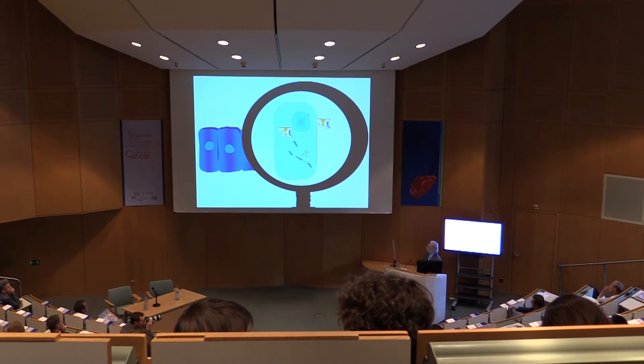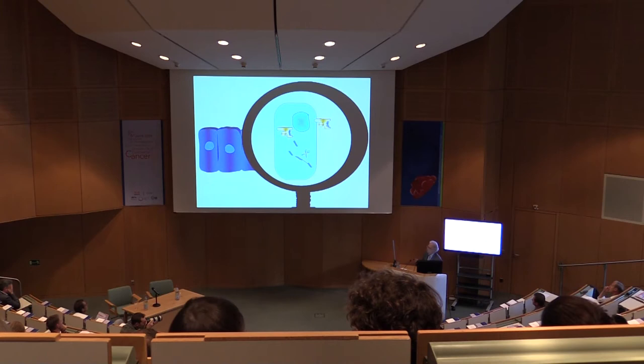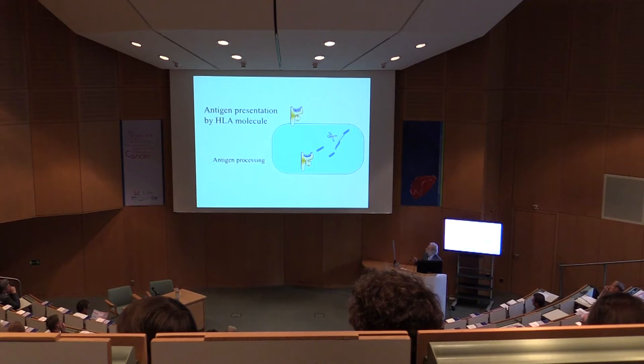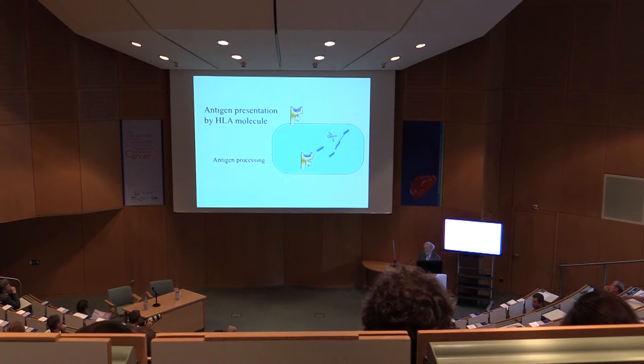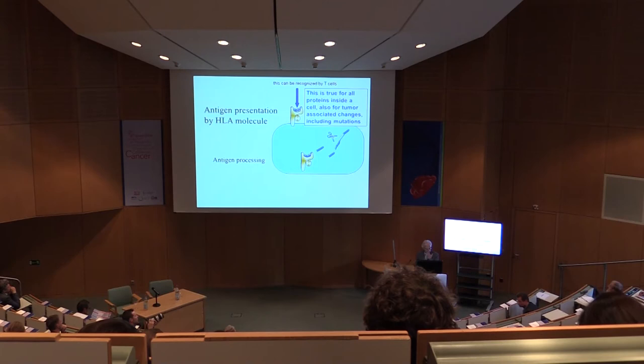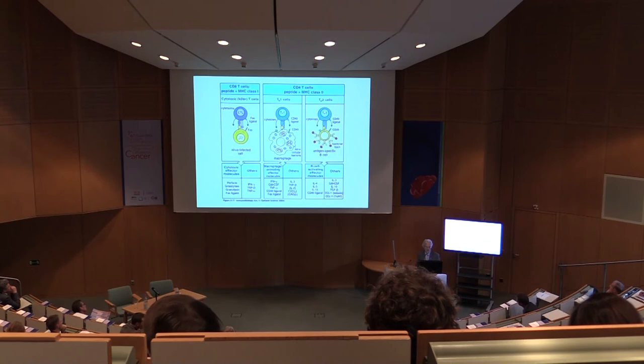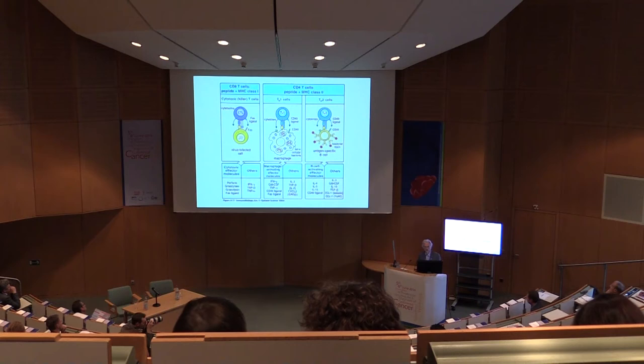All of our cells have this amazing system of antigen presentation on the cell surface by the HLA molecules or MHC molecules. Their function is to collect fragments of proteins or peptides inside the cell and bring them to the cell surface, where these peptides can be recognized by T-cells. This is also the case for tumor-associated changes including mutations. T-cells can be cytotoxic cells killing a cell, or inflammatory or helper cells, also able to attack tumors.